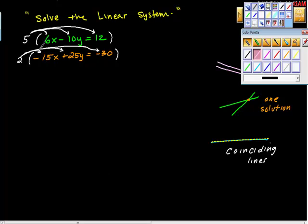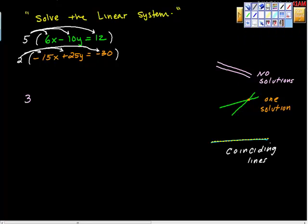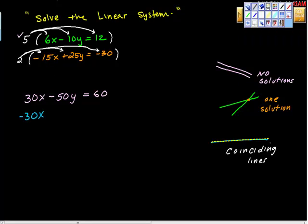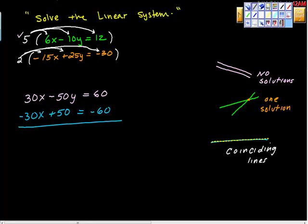Welcome back. When I did that, what I got was this. I multiplied and got 30x minus 50y is equal to 60. That's the first equation. Now for the bottom equation: 2 times negative 15x is negative 30x. 2 times — this is 50 positive. That's interesting, isn't it? — equals negative 60. So when we do our elimination part, we're just going to add these together and we get zero plus zero equals zero.